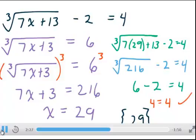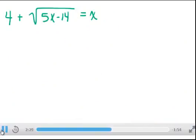One more equation. 4 plus the square root of 5x minus 14 equals x. Step 1: Isolate the radical. We need to subtract 4 from both sides.